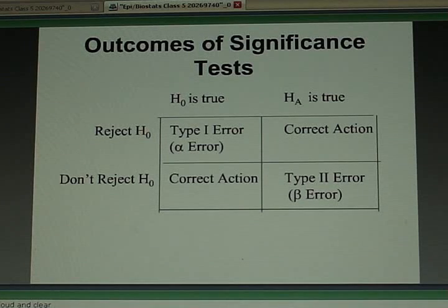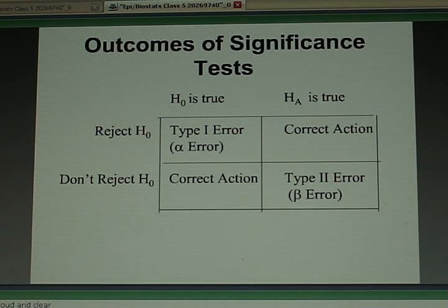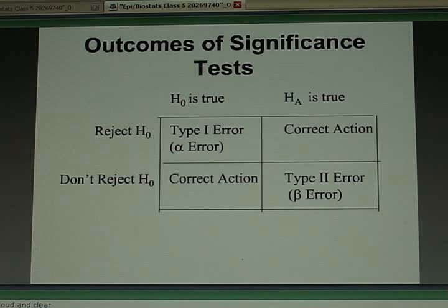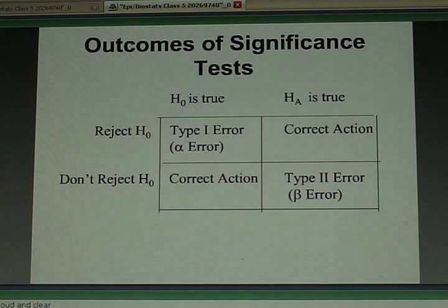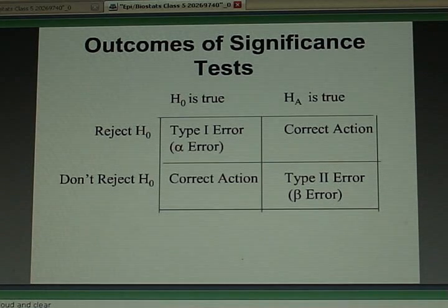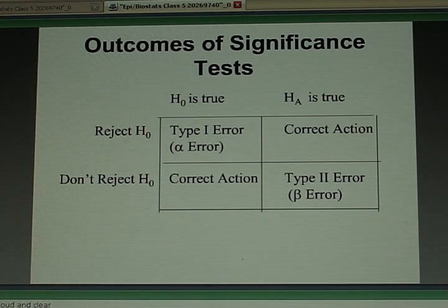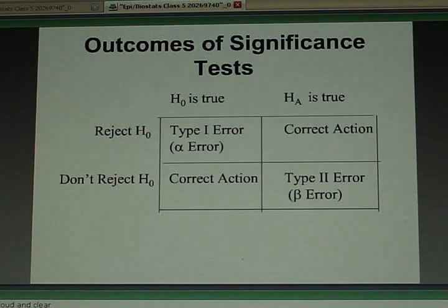So my type 1 error has a defined value. It can be no bigger than, say, 5%. So you say if your p-value is less than 5%, you'll call something statistically significant.